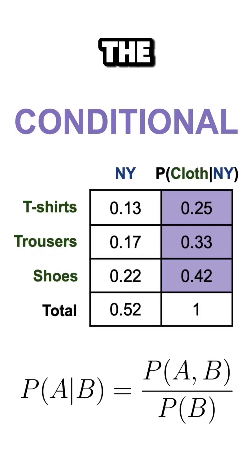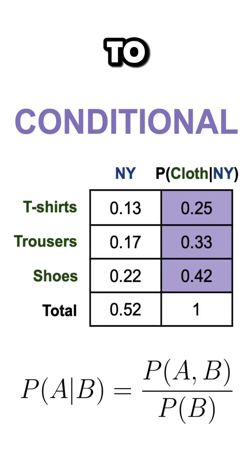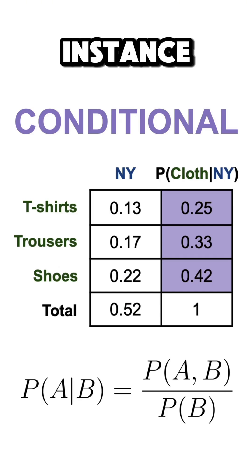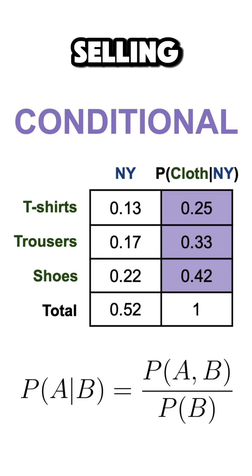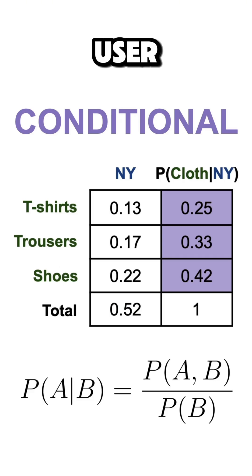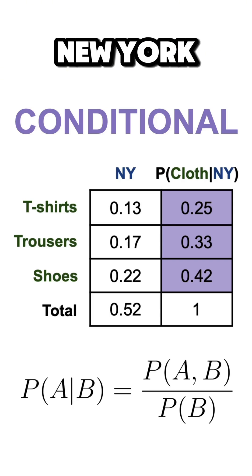Finally, the conditional probability shows us how probable it is for an event to occur given that another event has already occurred. For instance, in our example, a conditional probability would be the chance of selling a pair of trousers to a user given that we already know that this user is from New York.